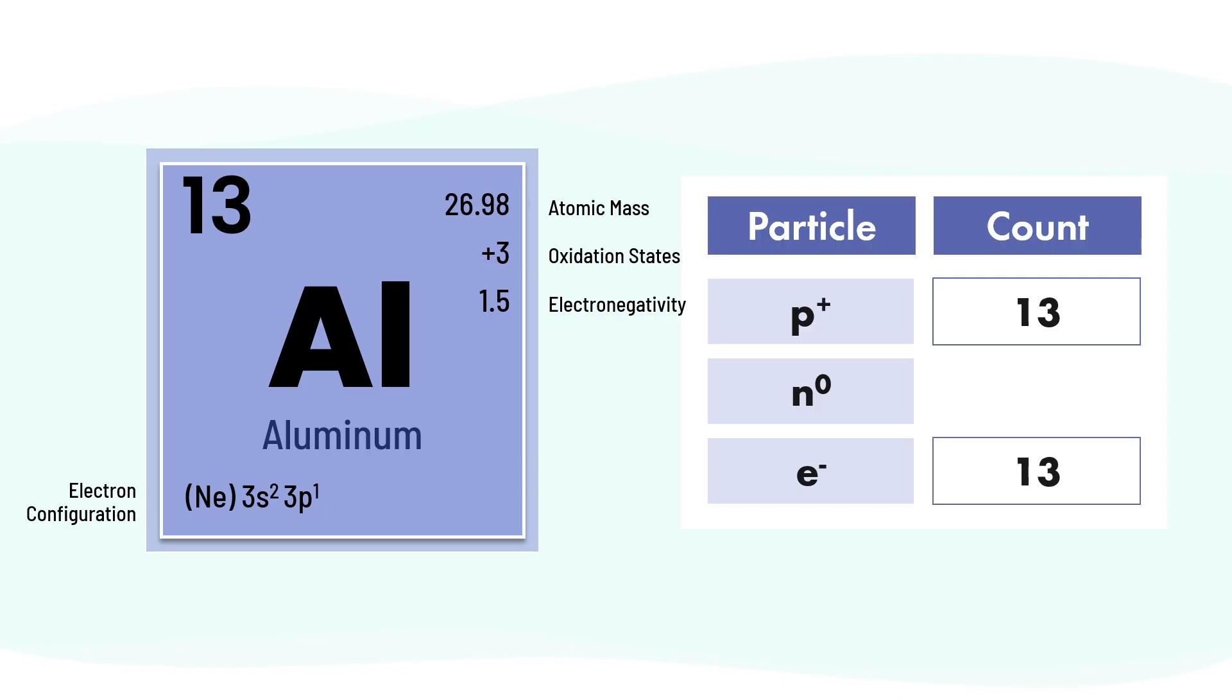Now look at the atomic mass—it says 26.98. But we can't have a decimal number of protons or neutrons, so we round it to the nearest whole number. To find the number of neutrons, subtract the atomic number from the rounded mass number. That's 27 minus 13, which gives us 14 neutrons.